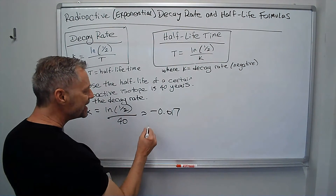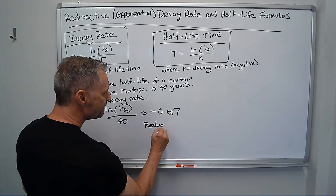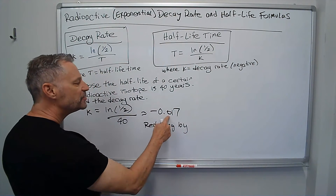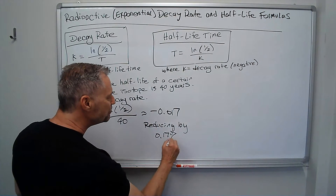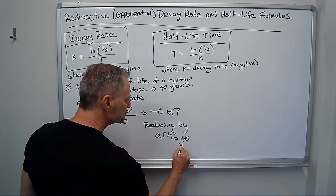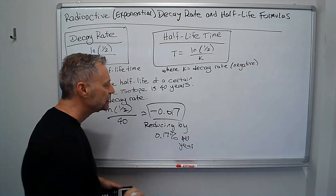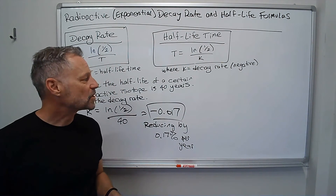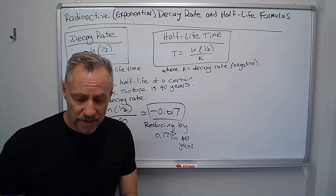Or if I wanted, I could say it's reducing by — if I move the decimal two places — 0.17% per year. But that's my decay rate: negative 0.017. That's as simple as it is, that's all there is to it.